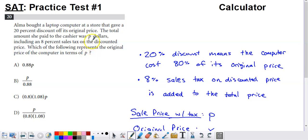So keep in mind what P is. P is the amount that she had to pay the cashier. So that's the sale price plus the tax on that sales price.